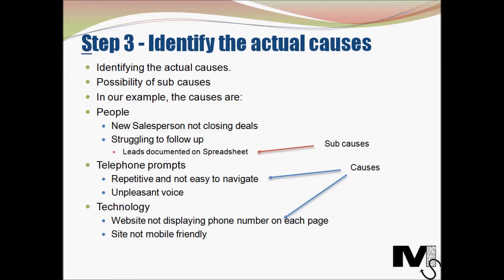The first cause category is people. The causes are: the new salesperson is not closing deals, and the salespeople are struggling to follow up. There is a sub-cause relating to the follow-up issue — leads are currently documented on a simple spreadsheet instead of a lead management system. The next category is telephone prompts, with causes that the prompts are repetitive and not easy to navigate, not efficient enough, and have an unpleasant voice that's not welcoming for customers.